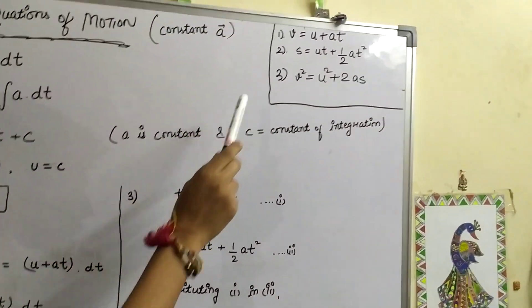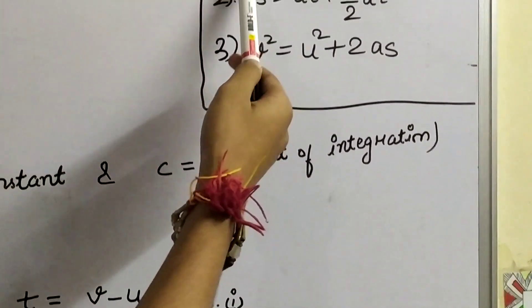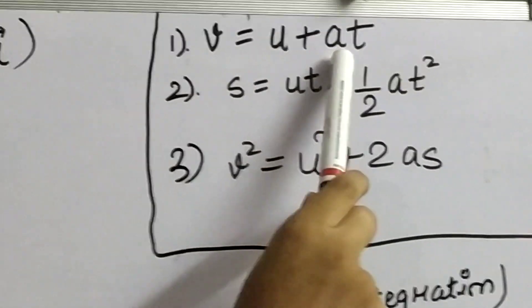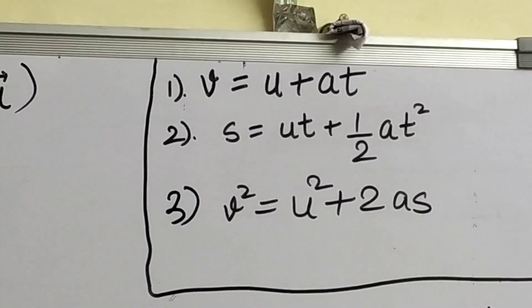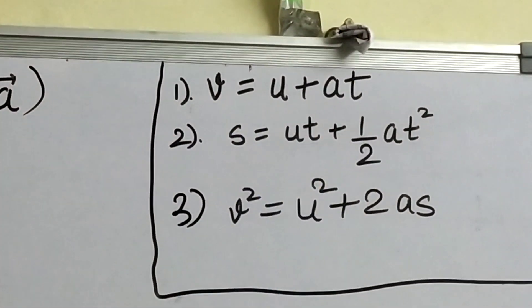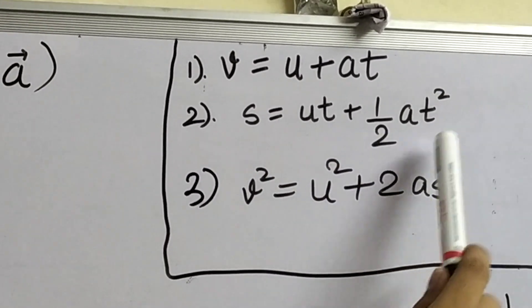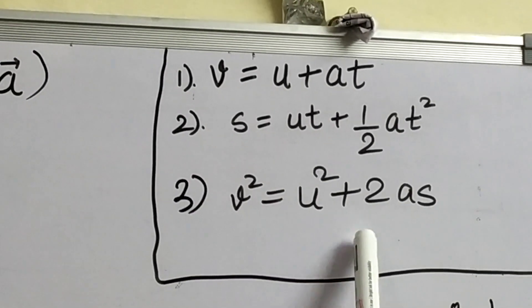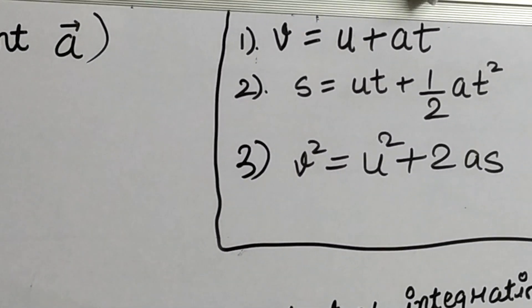These are our three equations of motion. In these equations, V is your final velocity, U is initial velocity, A is your acceleration, T is your time, and S is total distance travelled. Our first equation of motion is V = U + AT. The second equation is S = UT + ½AT², and the third one is V² = U² + 2AS. Now, we are going to derive these equations one by one.